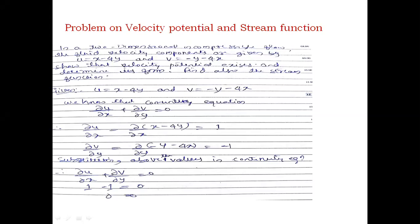Dear students, I am going to solve a problem on velocity potential and stream function. The problem statement is: in a two-dimensional incompressible flow, the fluid velocity components are given by u = x - 4y and v = -y - 4x. Show that velocity potential exists and determine its form. Find also the stream function.